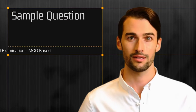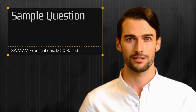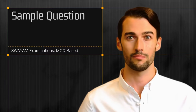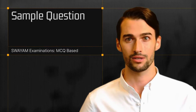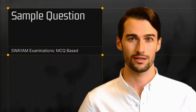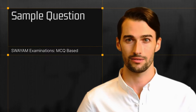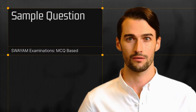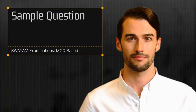In the end-term examinations, you will encounter various types of questions to assess your understanding of the subject matter. One common format is the Assertion and Reasoning MCQ. In the Assertion and Reasoning format, you will encounter questions that are opinion-based, involve variables related to time, place, or persons, or are fact-based.